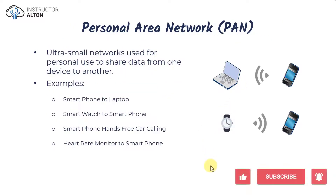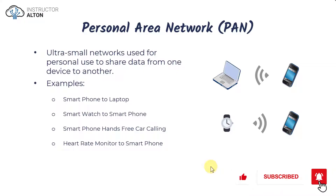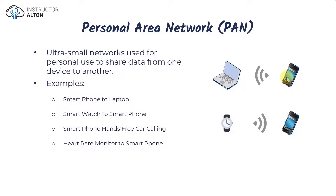Let's kick things off with the personal area network, or PAN. This is the smallest type of network we can create — typically considered an ultra small network used for personal use to share data from one device to another. For example, if we want to transfer photos from an iPhone over to a laptop, we could connect these two devices together via Bluetooth.